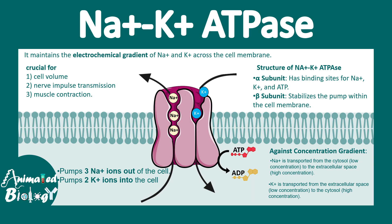The phosphorylation that happens to the pump from ATP is used as a driving force to pump these ions against the concentration gradient. Sodium is transported from the cytosol to the extracellular space where its concentration is high, and potassium is transported from the extracellular space to the cytosol.